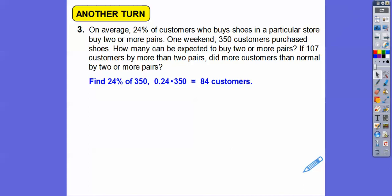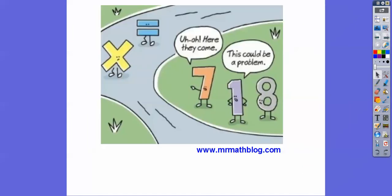So how many can we expect? 84 customers. So if 107 customers buy more than two pairs, did more customers than normal buy more than two pairs? So since 107 is greater than 84, I'm going to say, yes, more customers than expected did buy two or more pairs out there. All right, you guys. I hope that makes sense, and take care.